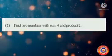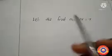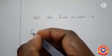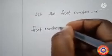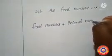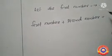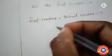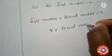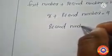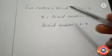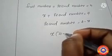Next, question number two: find two numbers with sum 4 and product 2. Let the first number be x. Since the sum of the two numbers is 4, we can write x + second number = 4, so the second number is 4 − x. Given that the product of these two numbers is 2, we write x(4 − x) = 2. Opening the bracket, we get 4x − x² = 2.